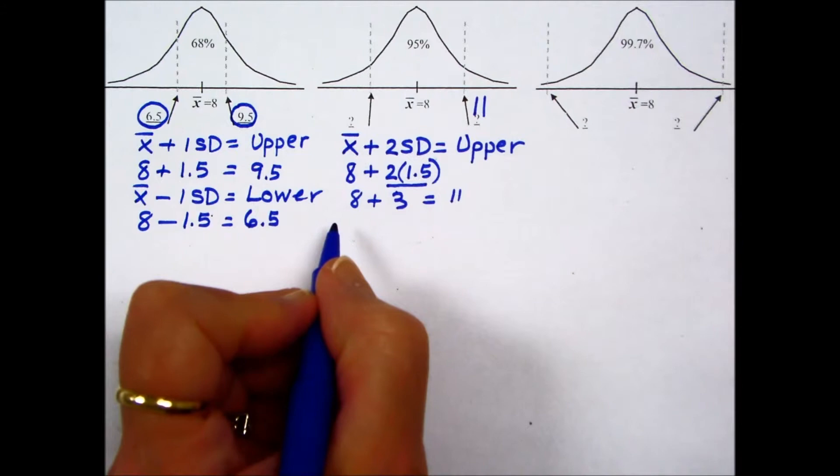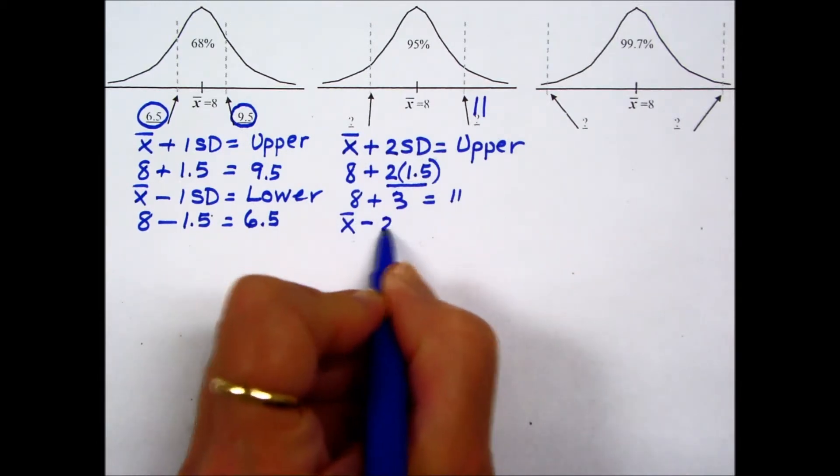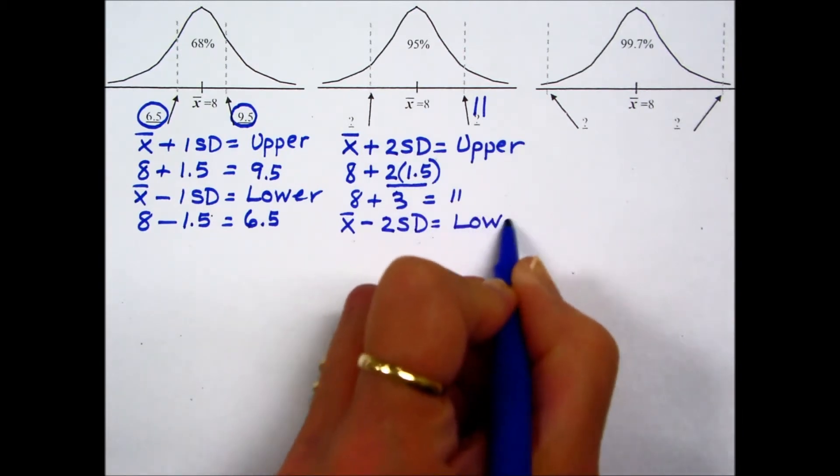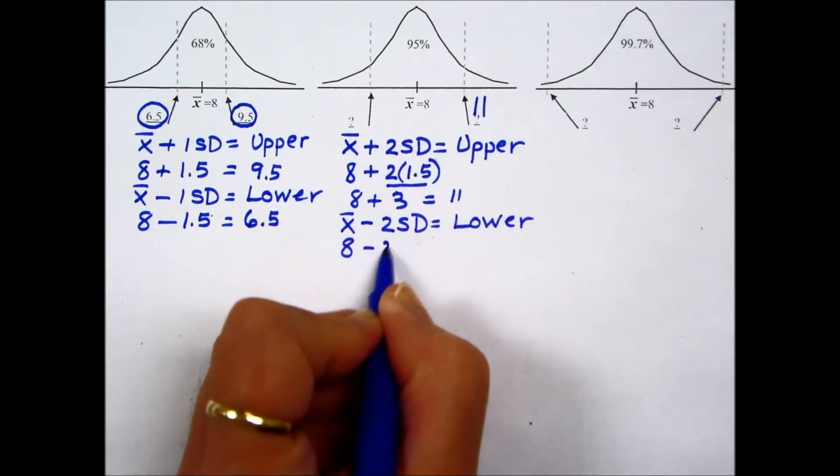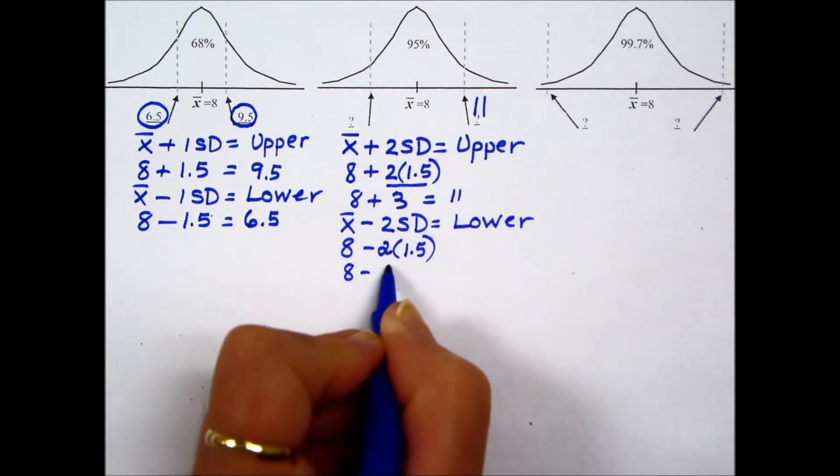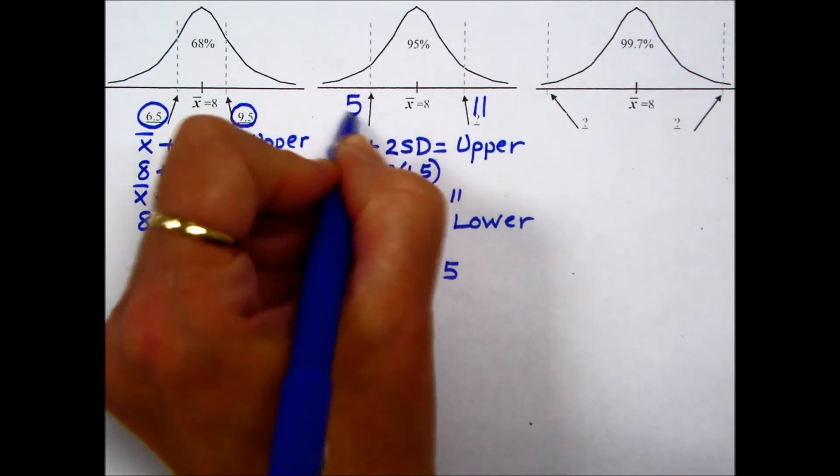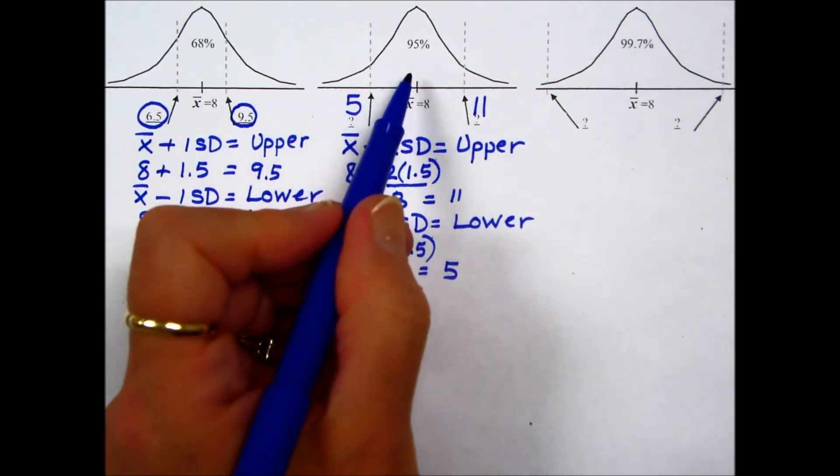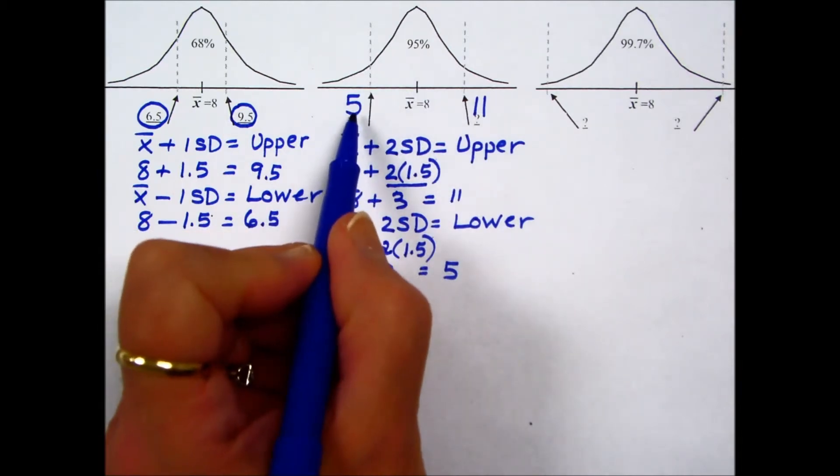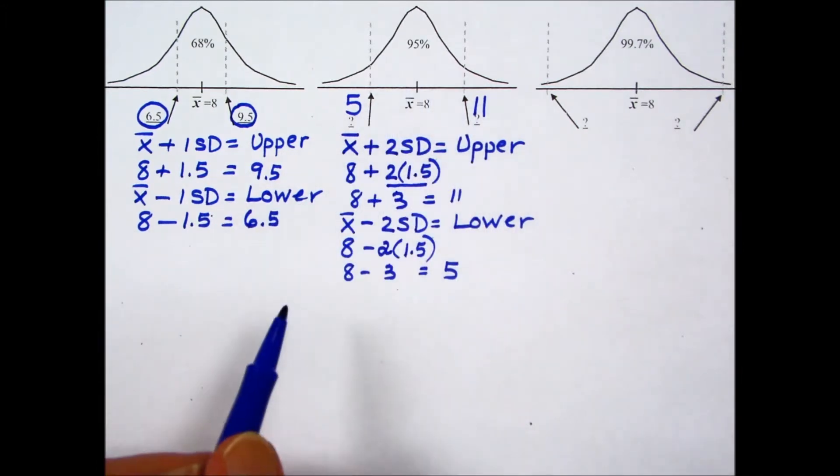To find the lower boundary for 95% of the values, we will take the mean minus 2 times the standard deviation. The mean of 8 minus 2 times the standard deviation, again we'll multiply first, 8 minus 3 gives us a value of 5. 95% of the data, whatever this happens to be, will run between a low of 5 and a high of 11, 95% of the time.